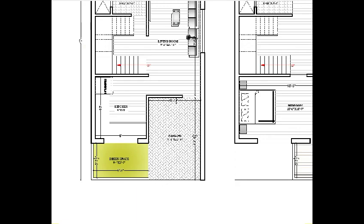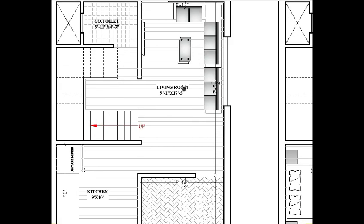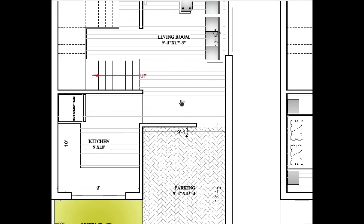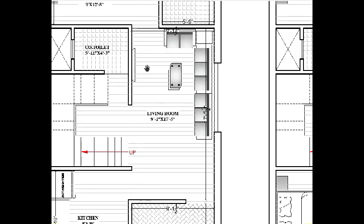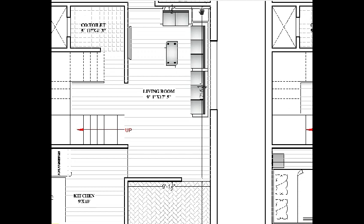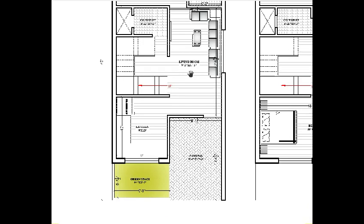Here is the semi-public area — this is the living room. The living room width is 9 feet 1, same as the parking broadness. The length is 17 feet 5, so here to here is 17 feet 5.